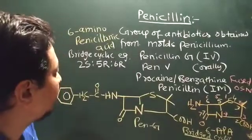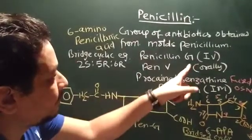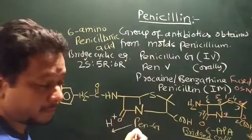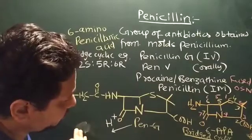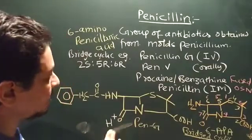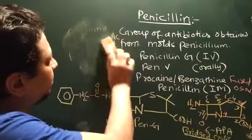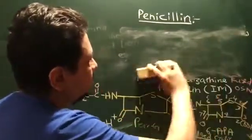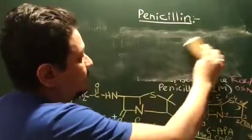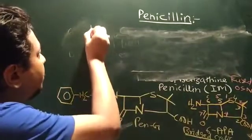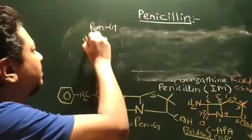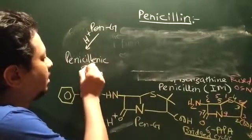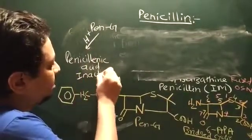Now after that, if I go ahead, we have to know that why penicillin G given IV not orally? Why? Because penicillin G can be degraded by the acid, the GIT acid. The degraded product of penicillin G is penicillinic acid, which is inactive.